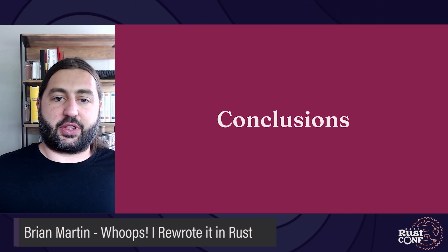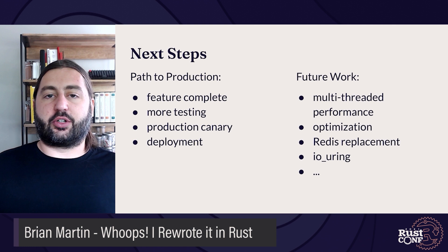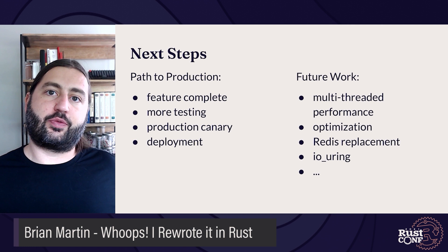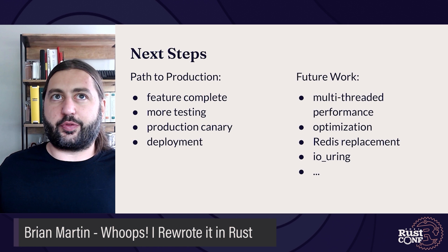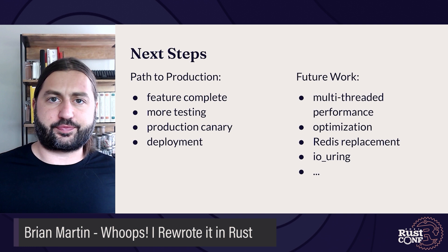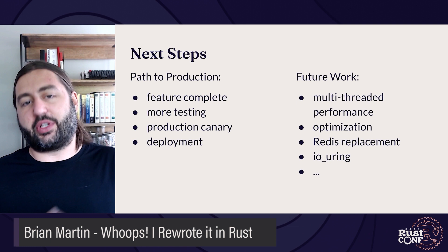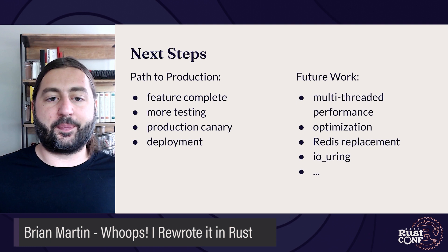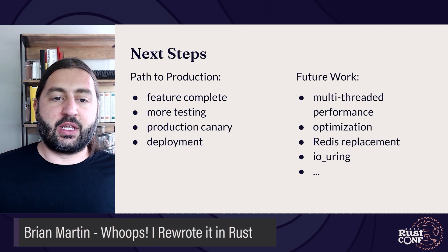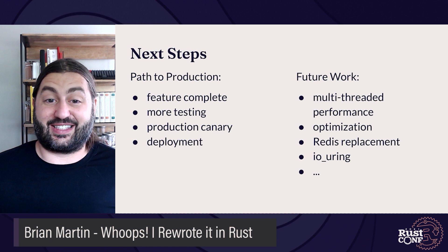To wrap up with a summary: there's more work to be done. There are two parallel tracks going forward — one is the path to production for this Rust implementation. It needs to get to feature complete, with a few remaining odds and ends for full feature parity with the C implementation. Once that's done, we'll move on to more testing, deploy a single instance to production as a canary, and then do an actual deployment. We think we should be able to have a Rust cache server serving production traffic by around the end of the year.